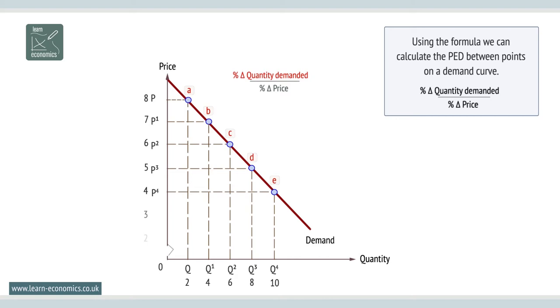Over the price range 8 to 7, the PED coefficient is minus 8. This is greater than minus 1, and elastic.